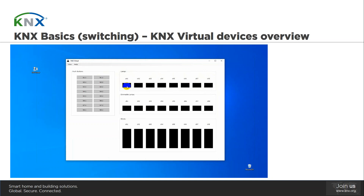By clicking on a channel, we can indicate whether a consumer of this channel is defective or not. When it's defective, the message 'kaput' is shown. We use a German word for that, but we think during the years it has become really international as a word to indicate that something is broken. Clicking the lamp again restores its status. Below the switching actuator, we see the dimming actuator and the blinds actuator. However, to save time, we will skip those as we're not going to use them for the switching function.